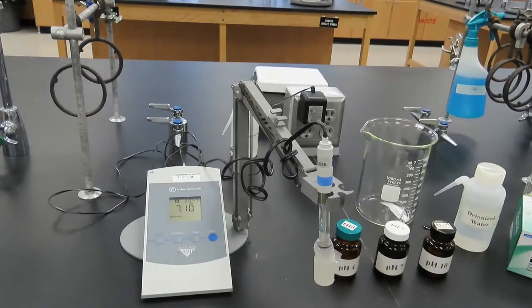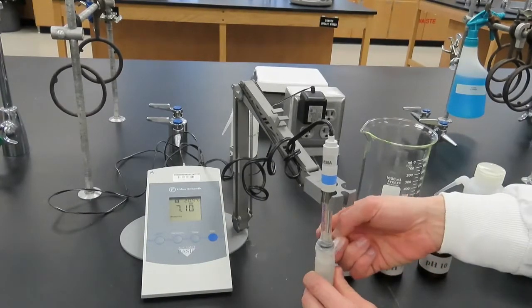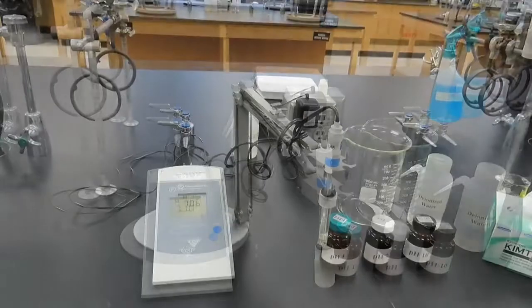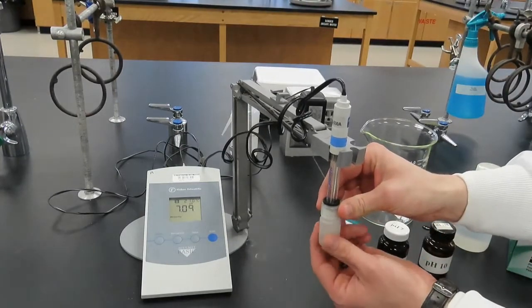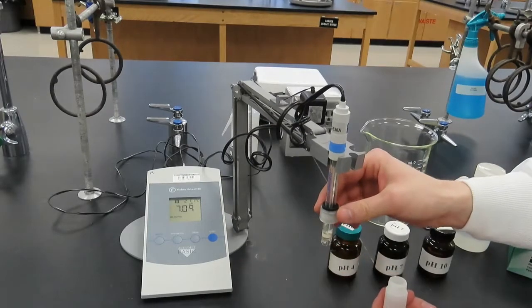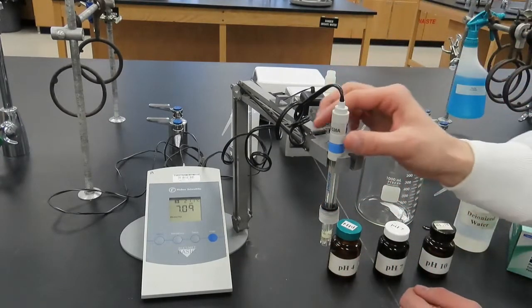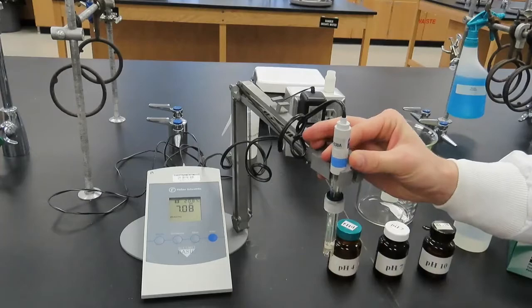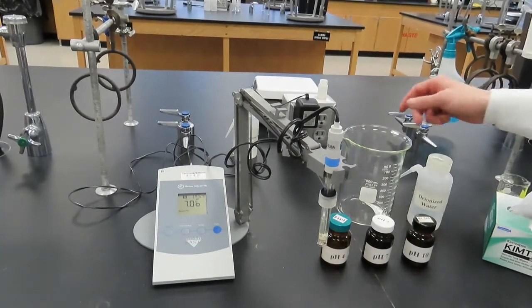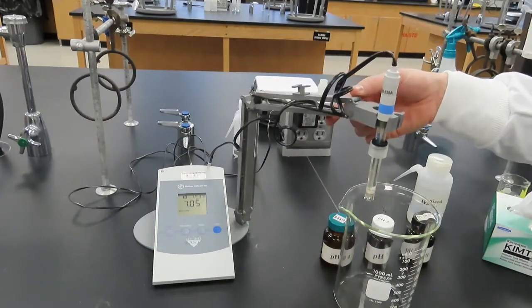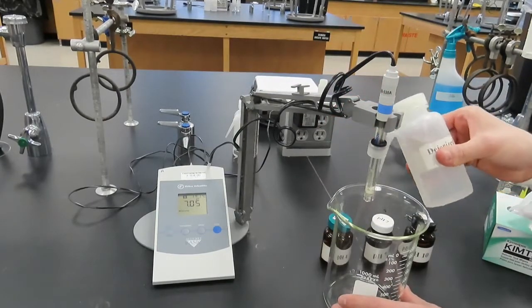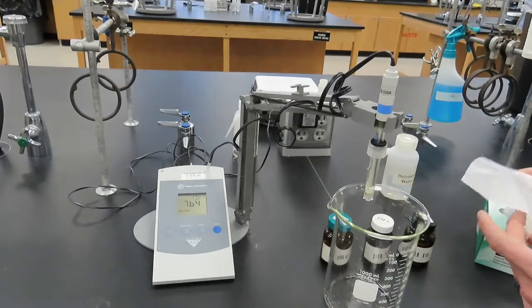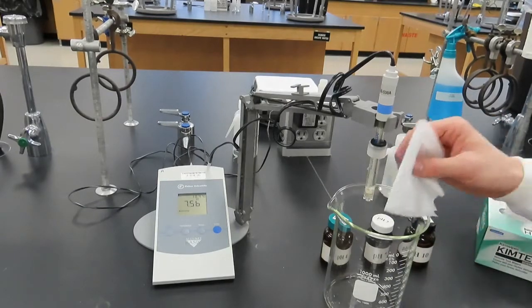First, remove the pH electrode from the storage bottle. Hold the cap and rotate the bottle to unscrew it and place the bottle in a secure location where it is unlikely to be tipped over. Push the cap with its O-ring up a few inches on the electrode. To minimize contamination, we will always rinse and dry the electrode between solutions. With a large beaker placed underneath the pH electrode, thoroughly rinse the electrode with deionized water. Then pat dry the electrode with a chem wipe tissue. Do not wipe dry.